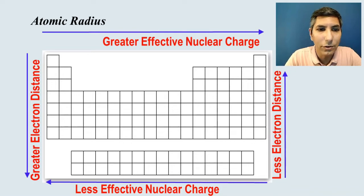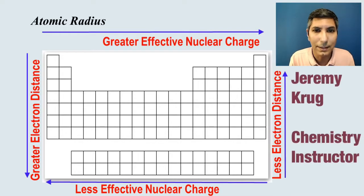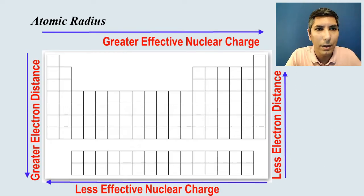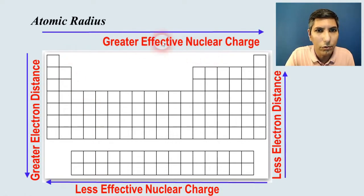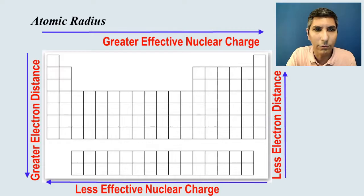We're moving on with unit 1 section 7 in this second video. This time we're going to be focusing on atomic radius and ionic radius of atoms and how they compare to each other. This is our cheat sheet from earlier: we use effective nuclear charge when comparing atoms left and right across from each other, and if it's up and down we talk about electron distance.